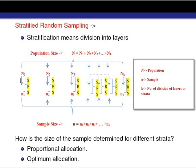A stratifying factor is called effective if it divides the given population into different strata which are homogeneous or nearly homogeneous within themselves and the units in different strata are as unlike as possible. The stratifying factor will be more effective when after using it we get units within strata that are more homogeneous but units between strata are heterogeneous.